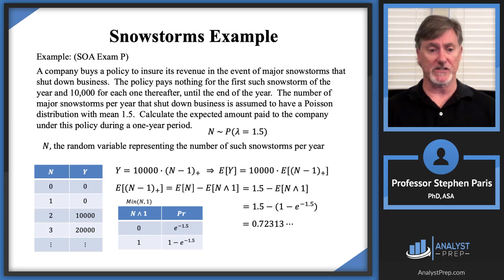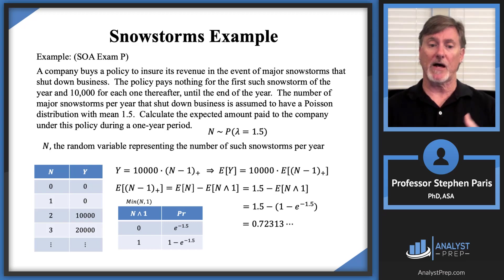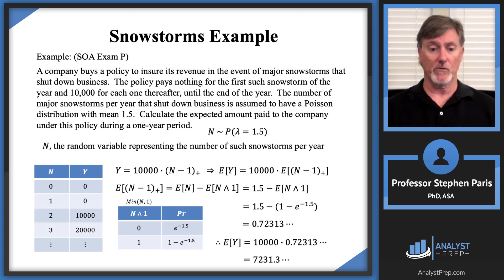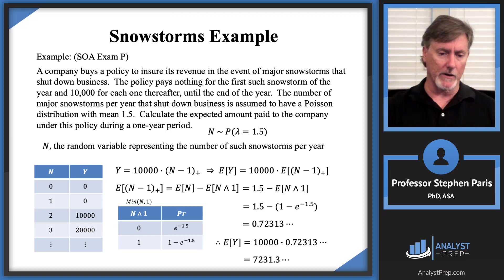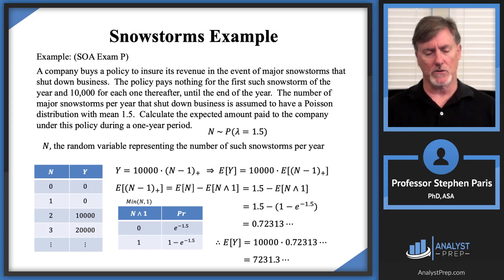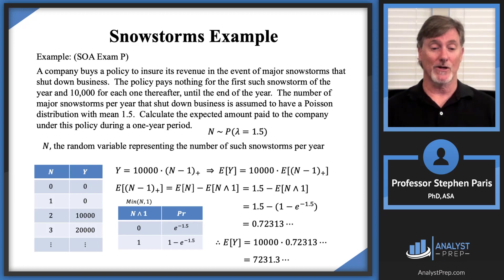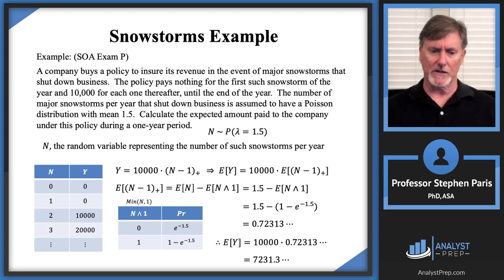Going through the calculation, E[(N − 1)+] equals 1.5 minus (1 − e^(−1.5)), which gives approximately 0.7231. Multiplying by 10,000, the expected payment to the company is approximately $7,231. I invite you to look at the SOA's posted solution for this problem and compare — I think you'll agree that using the STAM terminology and notation makes this problem considerably easier.